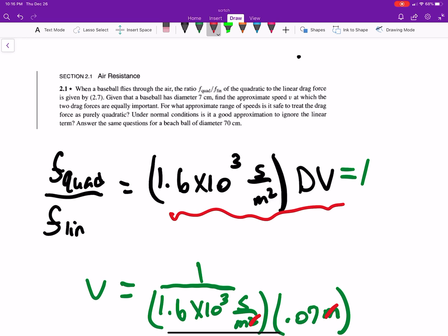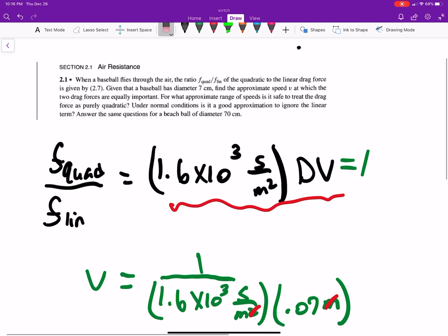I'm not going to do the beads ball one, but it's literally the same process. Essentially, you set this up. When it's equal to 1, when this red bit is equal to 1, that's when you need to consider both linear and quadratic drag. So we set it equal to 1.